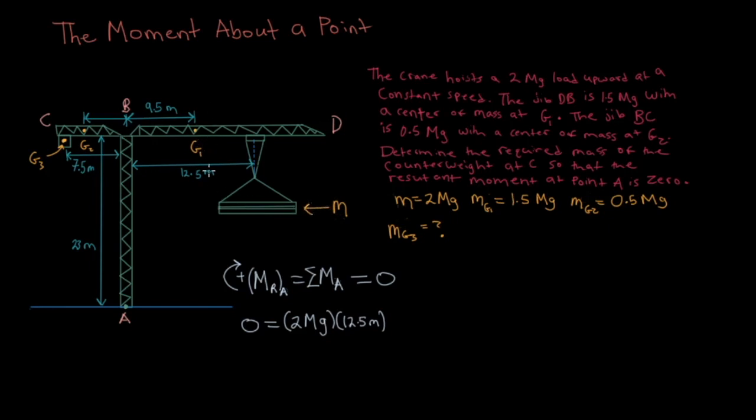Let's take a look at G1. So the mass of G1 is 1.5 megagrams, and as you can see it's on the right side of A. And again it will have a clockwise tendency so it will be positive. So we'll put in a plus 1.5 megagrams, and its perpendicular distance from point A is 9.5 meters.